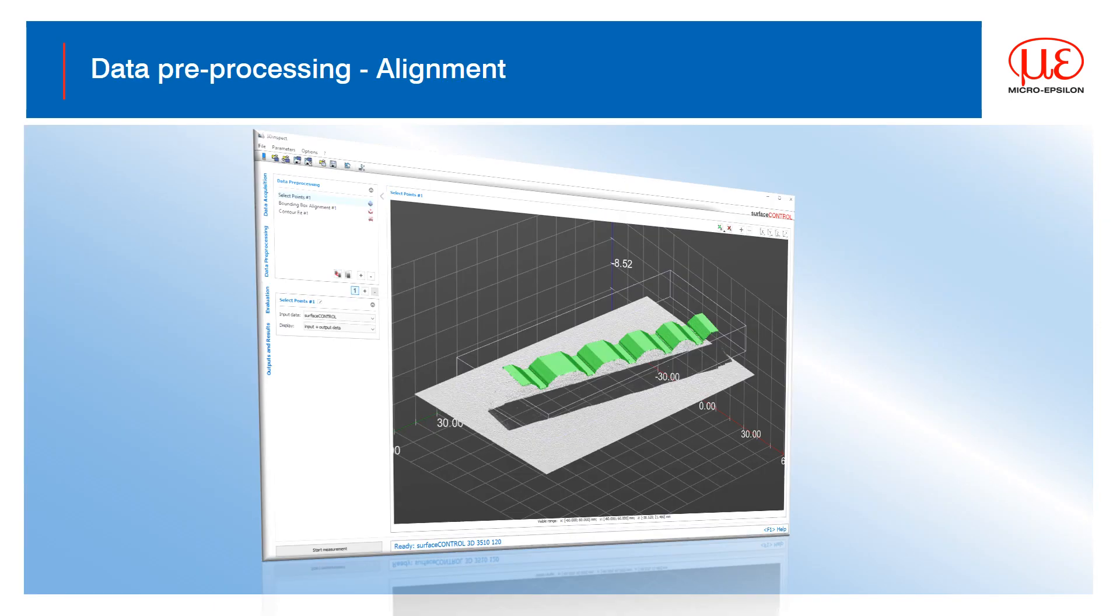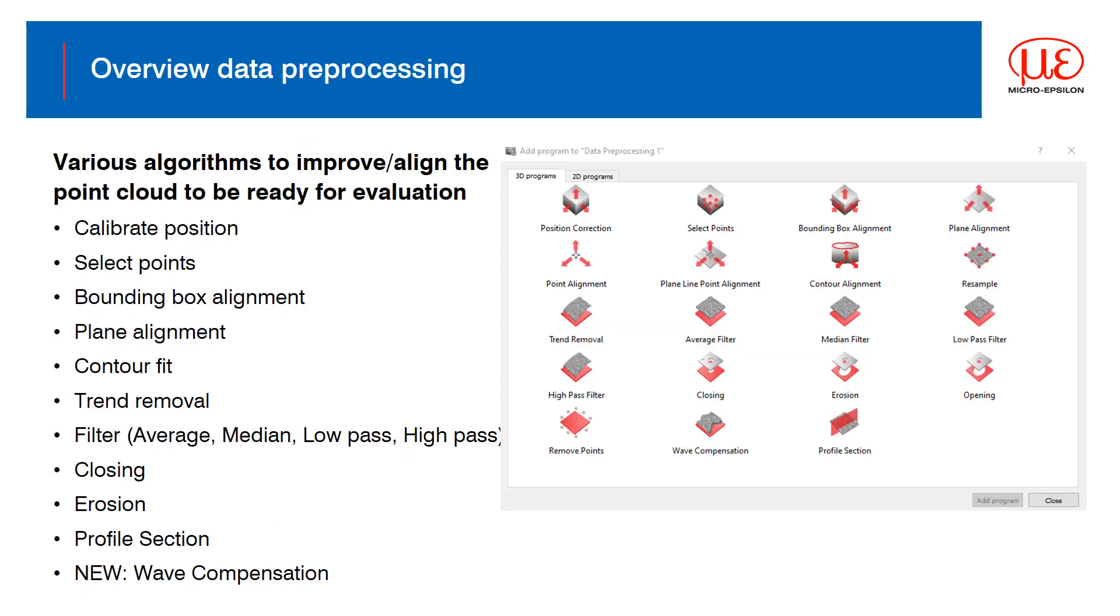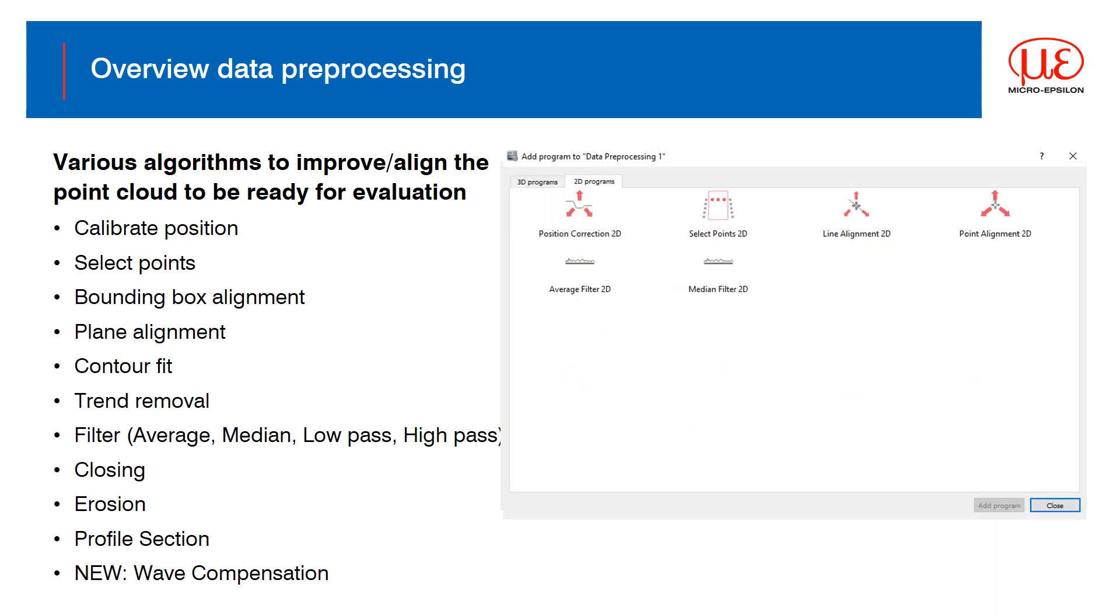Once you have captured the data, you then need to adapt it to a position or location that is usable. This is one of the first considerations 3D Inspect incorporates. Typically, the data you capture from your target with a sensor is not necessarily going to be aligned in the way you want to inspect it. There may be background data points, areas of no interest or that the target is not central to the coordinate system. So we provide various algorithms that can be used to align, reposition or manipulate the point cloud in both 3D and 2D. By employing pre-processing, you will make applying the evaluation tools later on much easier.